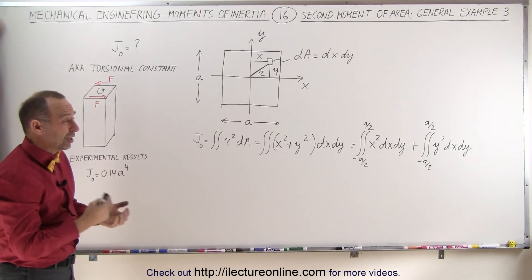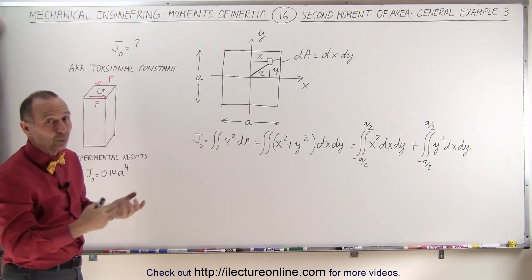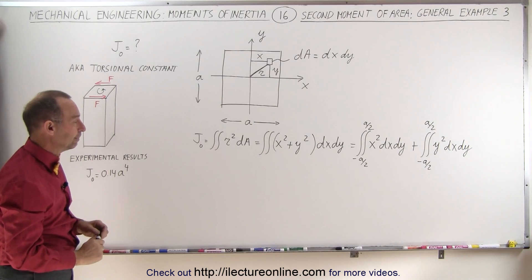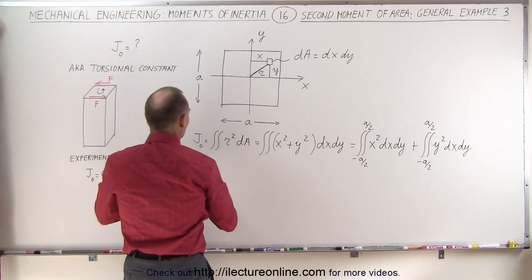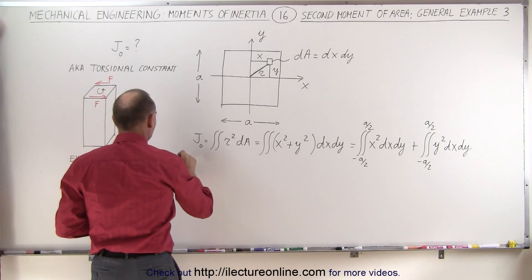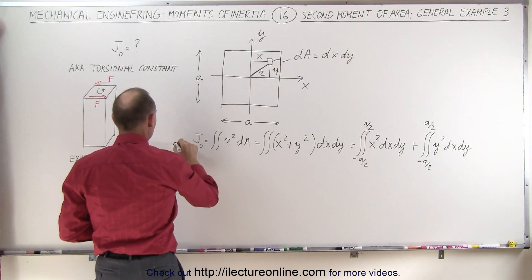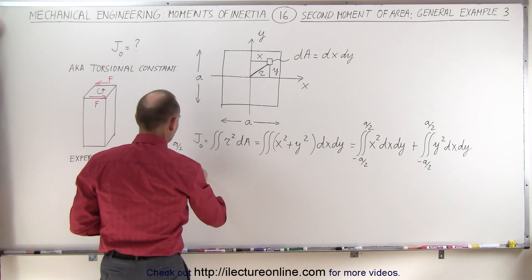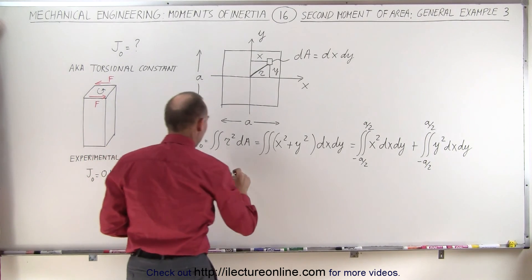We'll see in just a moment that those integrals will be identical in value, and therefore we only have to do one, but you'll see how to do the other one. And let's start with the first one here and see what we get. Okay, so when we do the first integral, the double integral from minus a over 2 to a over 2 of x squared dx times dy.